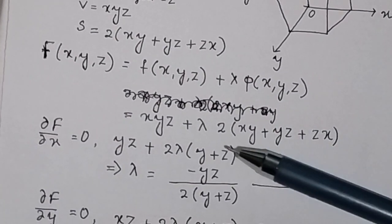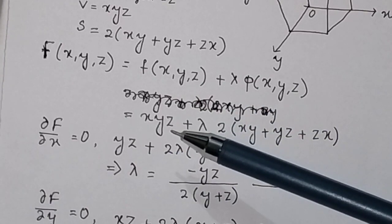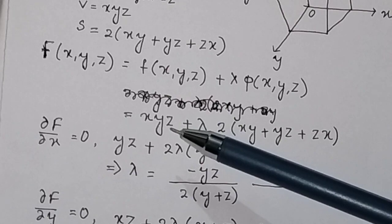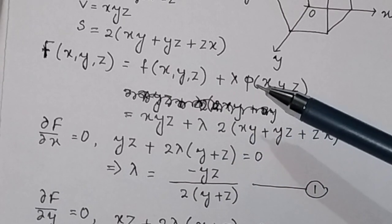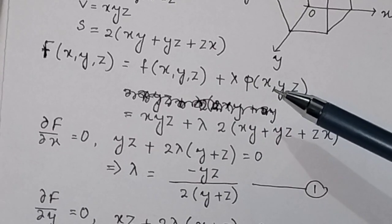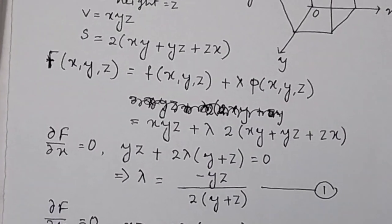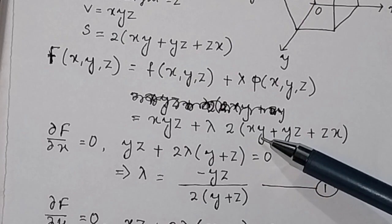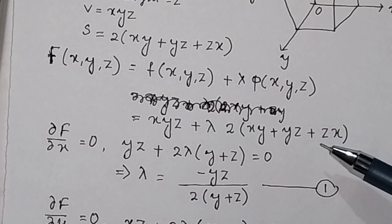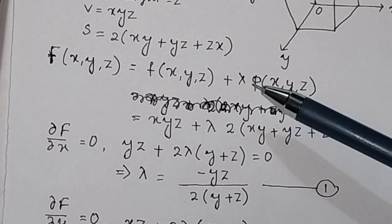Using constraint optimization by Lagrange multiplier, we have the formula: the function can be represented by f(x, y, z) + λ · φ(x, y, z). Here, f is the objective function — the volume of the box — and φ(x, y, z) is the constraint, which is the surface area: 2(xy + yz + zx), and λ is the Lagrange multiplier.